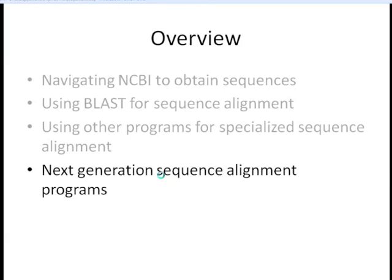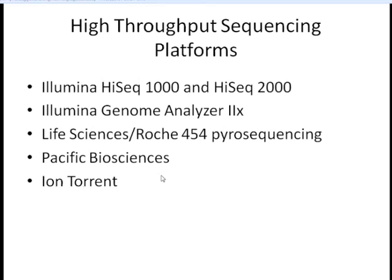The last thing we're going to talk about today is next-generation sequence alignment programs. There are a lot of different technologies now to generate high-throughput sequence. We have the Illumina Genome Analyzer 2 and now the Illumina HiSeq 1000 and HiSeq 2000, which generate short reads. Roche 454 gives you longer reads.